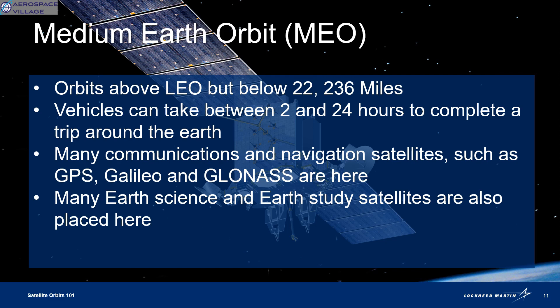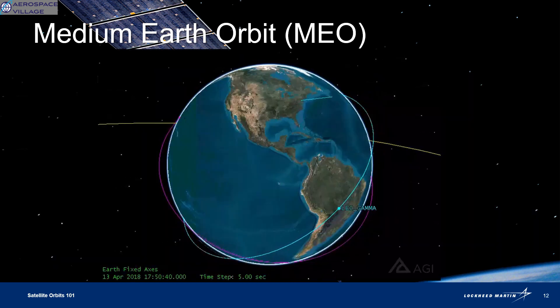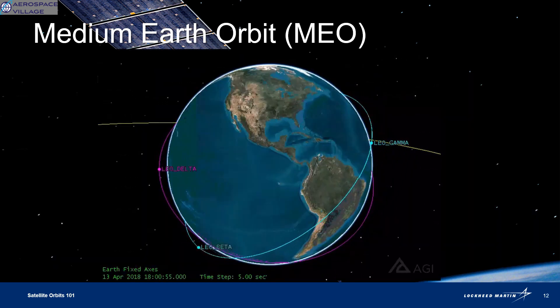MEO, or Medium Earth Orbit, happens above that 1,240 mile LEO threshold but below 22,236 miles. These orbits can take between 2 and 24 hours to get around the Earth. The coverage, or amount of surface the satellite can see at this distance, gives us things like GPS and other navigation satellite constellations. Constellations just means there's way more than one satellite doing that job.